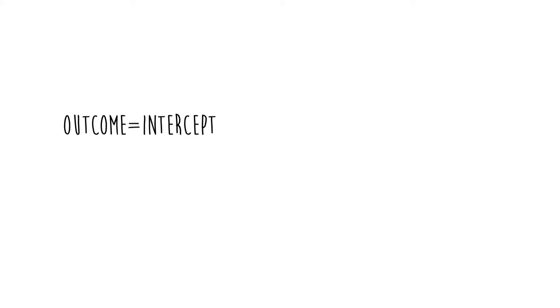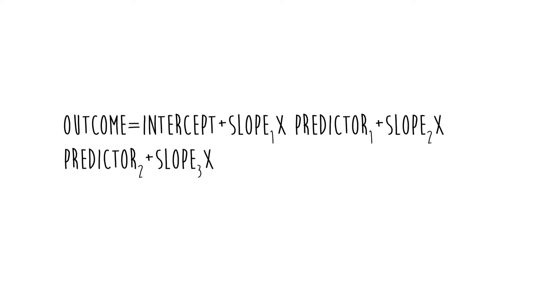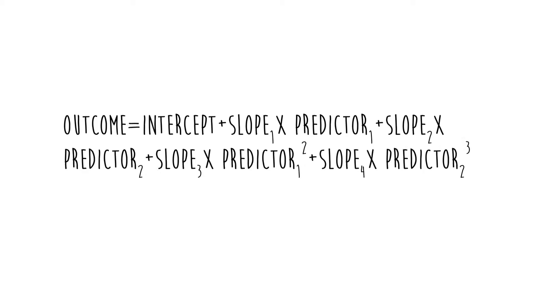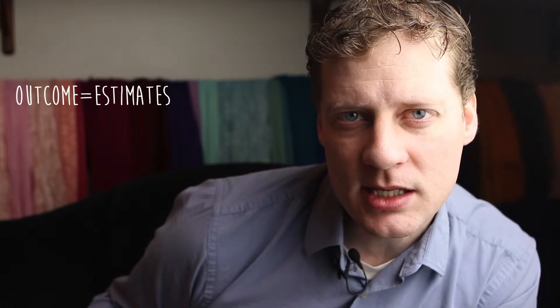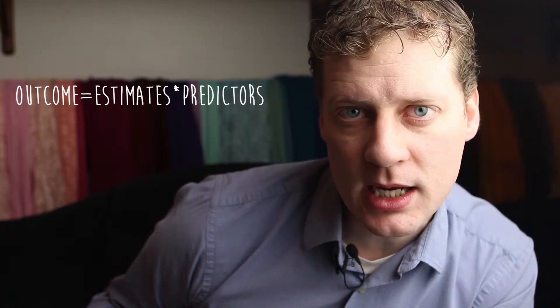The awesome and amazing thing about the general linear model is it is infinitely expandable. We might for example have: outcome equals intercept plus slope 1 times predictor 1, plus slope 2 times predictor 2, plus slope 3 times predictor 1 squared, plus slope 4 times predictor 2 cubed, plus e. Or if we wanted to simplify things, we would say outcome equals estimates times predictors plus e.